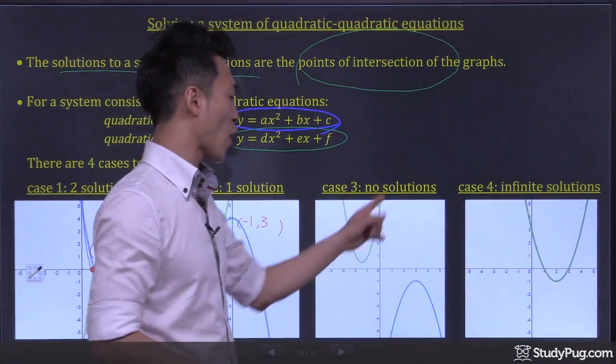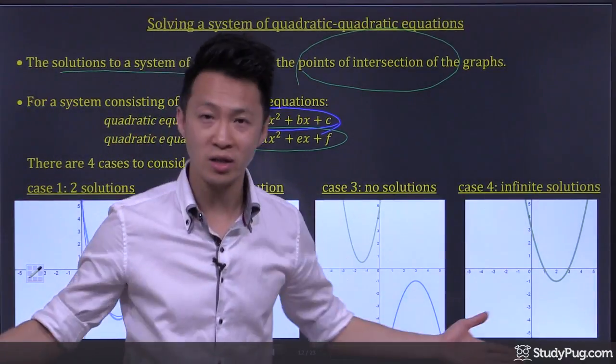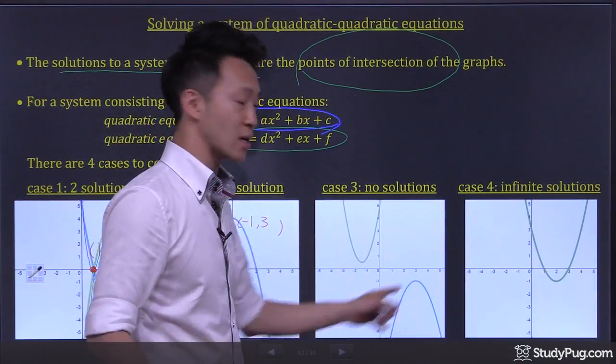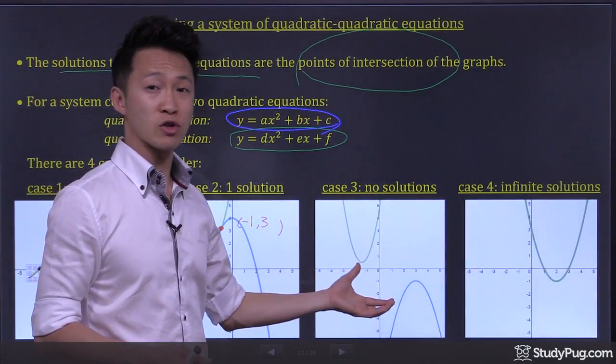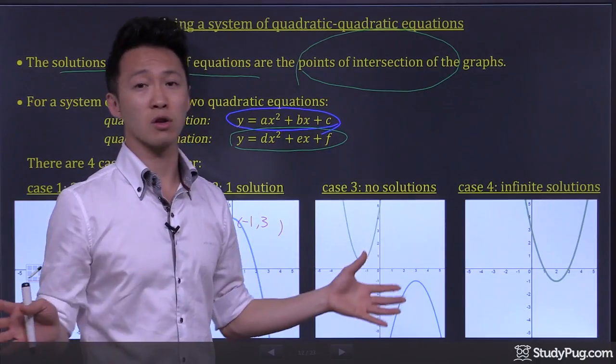The two parabolas can also have no intersections, like in this case. For this system of equations, there are no solutions.